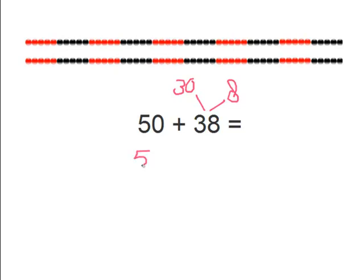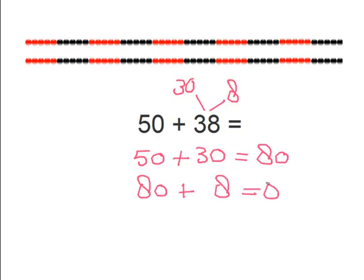So let's first add 50 plus 30 together. We know that equals 80. And now we just have to add 8 more. So 80 plus 8 equals 88. And 50 plus 38 equals 88.